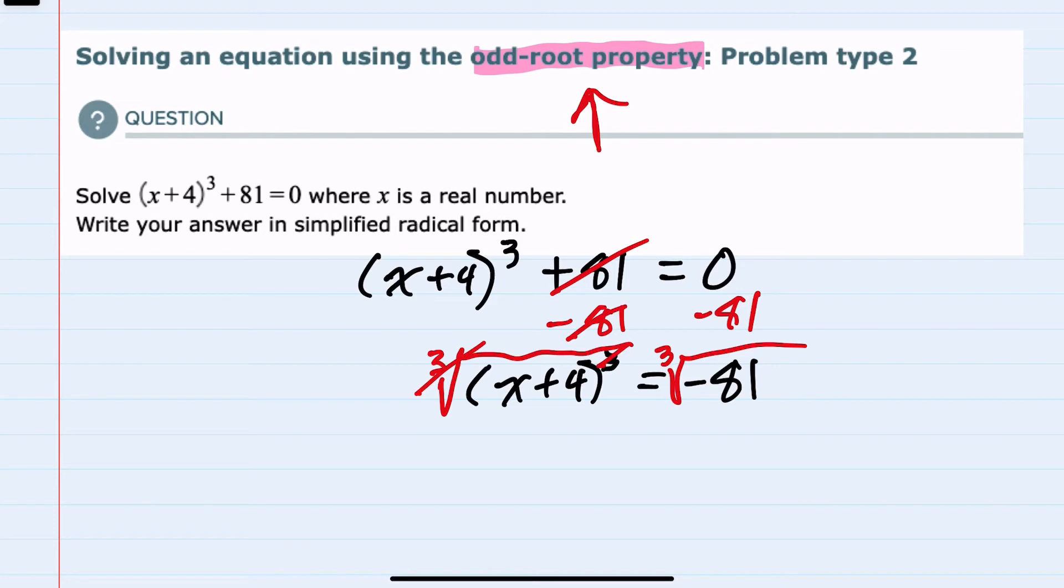The cubed root and the cube will cancel on the left side, leaving me with x+4. On the right side I have a cubed root that I would like to simplify if possible.